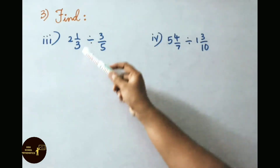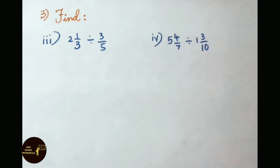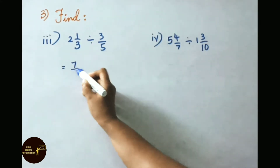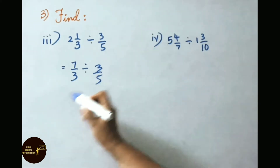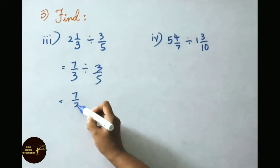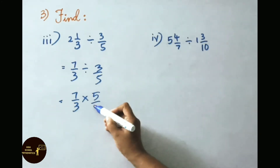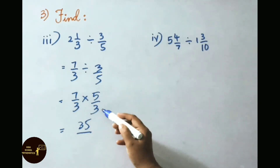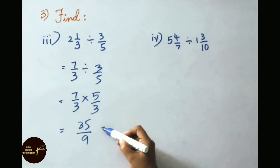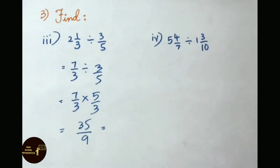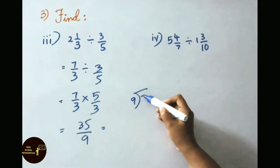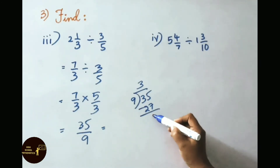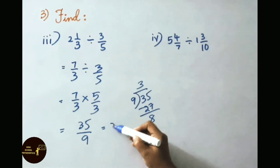See the third sum now: 2 and 1 by 3 divided by 3 by 5. First convert the mixed fraction to improper: 3 twos are 6, plus 1 is 7. So write down 7 by 3 divided by 3 by 5. Write down 7 by 3 into the reciprocal of 3 by 5, which is 5 by 3. Multiply the numerators: 7 fives are 35. Multiply the denominators: 3 into 3 is 9. Simplify by division: 9 threes are 27, remainder 8. So the answer is 3 and 8 by 9.